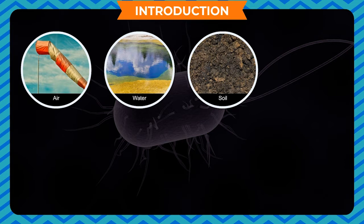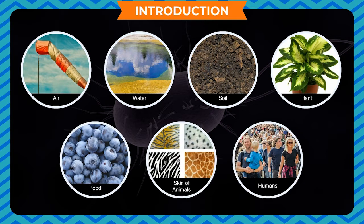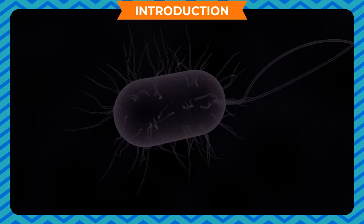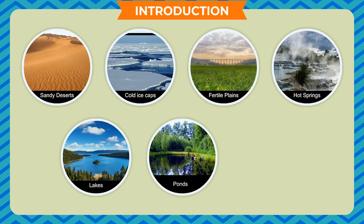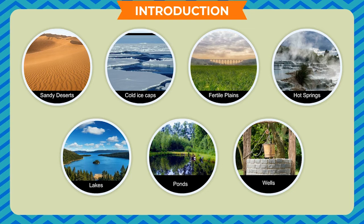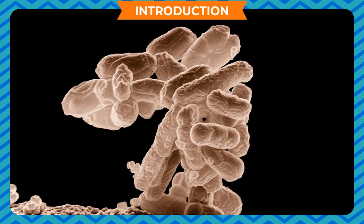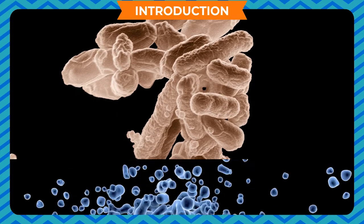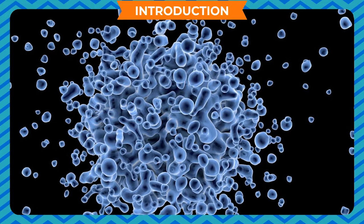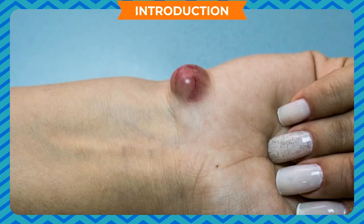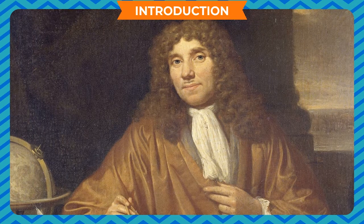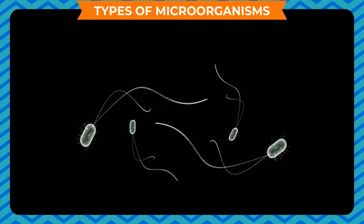Microorganisms are found in both living and non-living things such as air, water, soil, plants, food, and the skin of animals and humans. They can be found in sandy deserts, cold ice caps, fertile plains, hot springs, lakes, ponds, and wells — almost everywhere. Many microorganisms can resist extreme climatic conditions; however, those which cannot resist form hard coverings around themselves called the cyst. The first scientist to study microorganisms under a self-made microscope was Anthony van Leeuwenhoek.